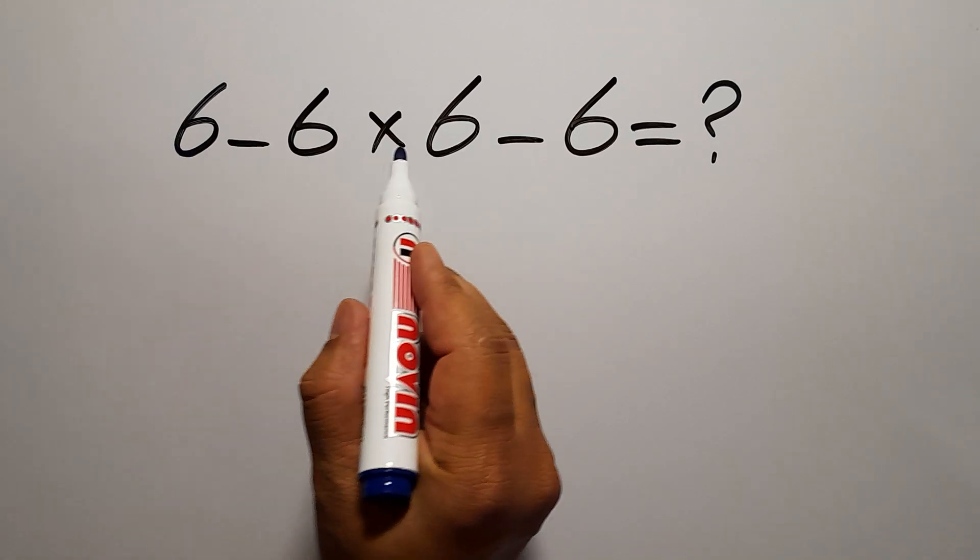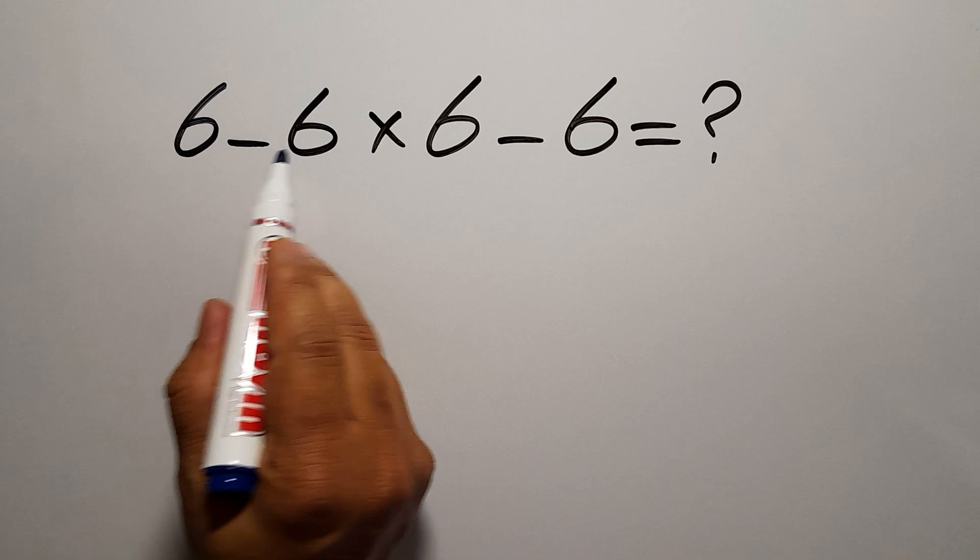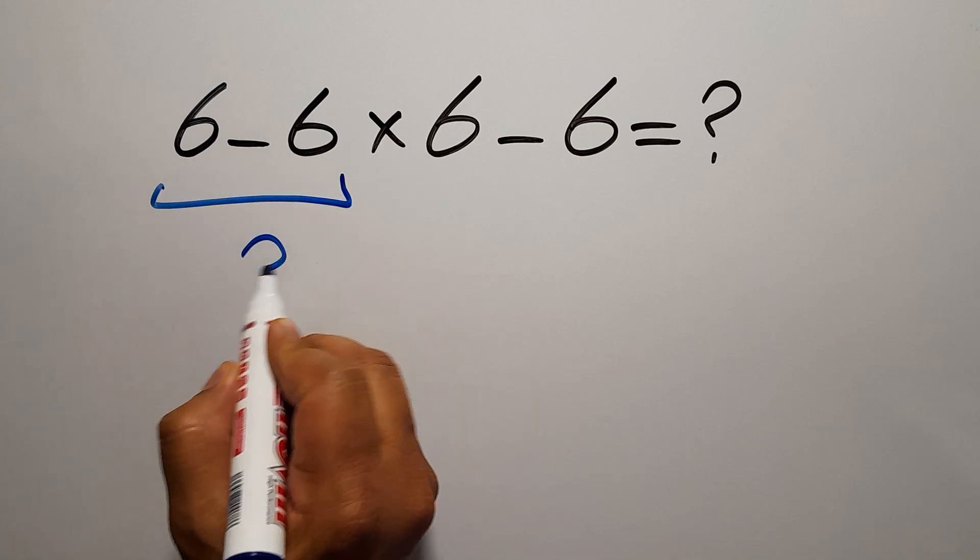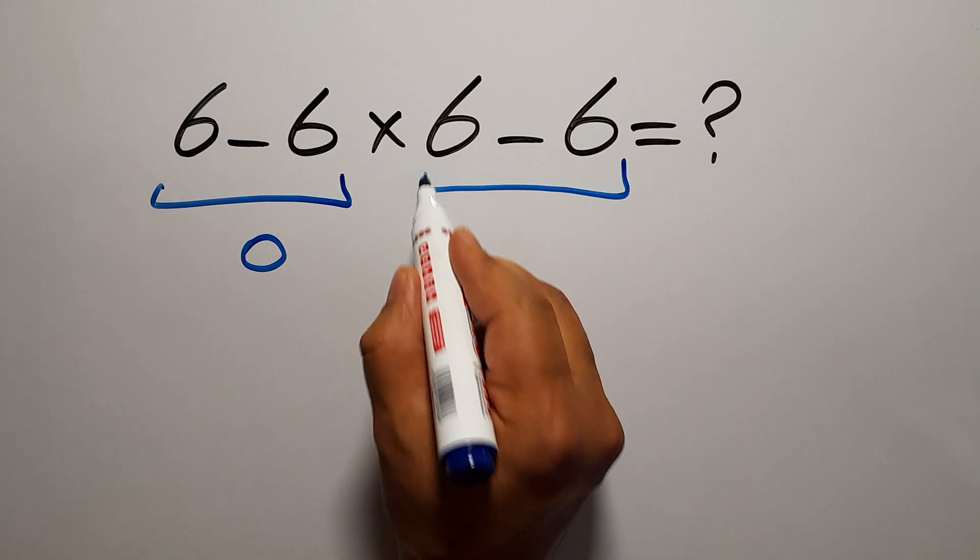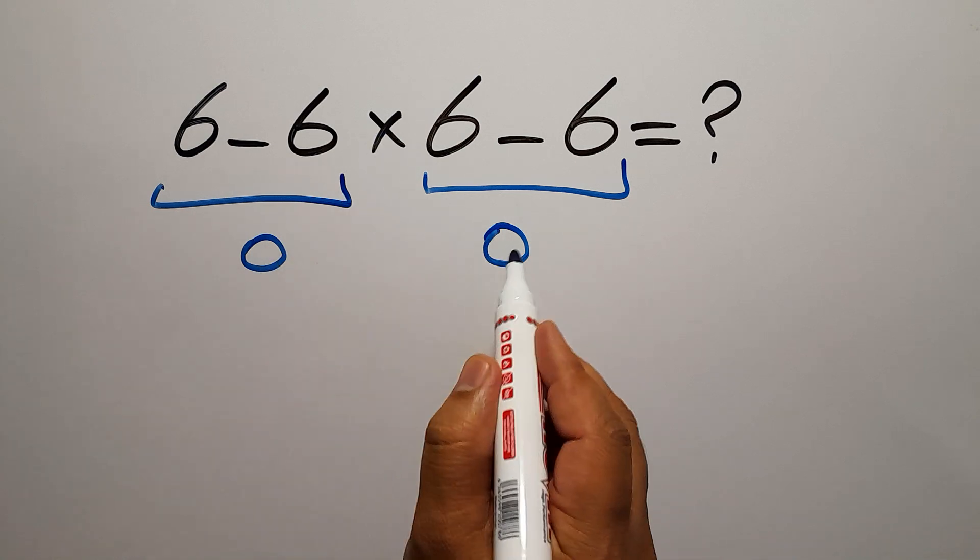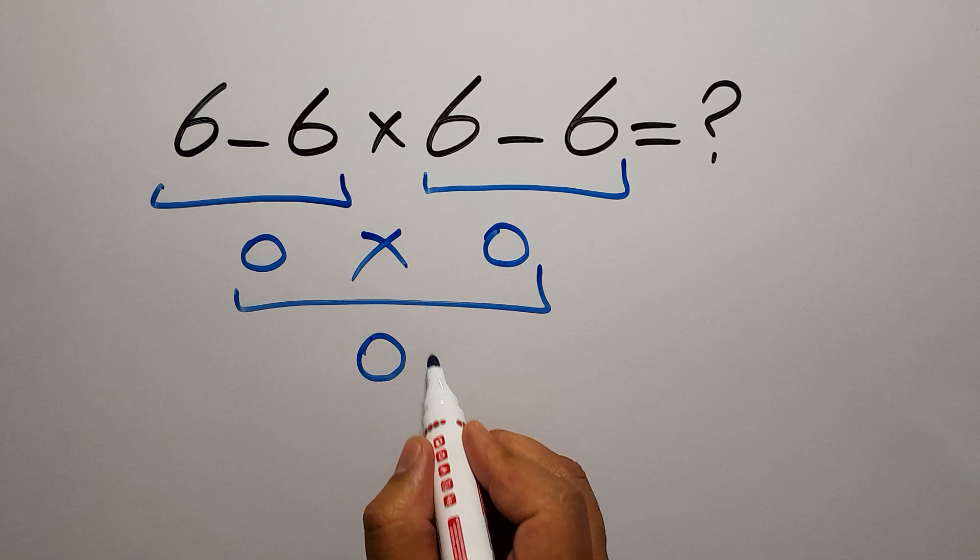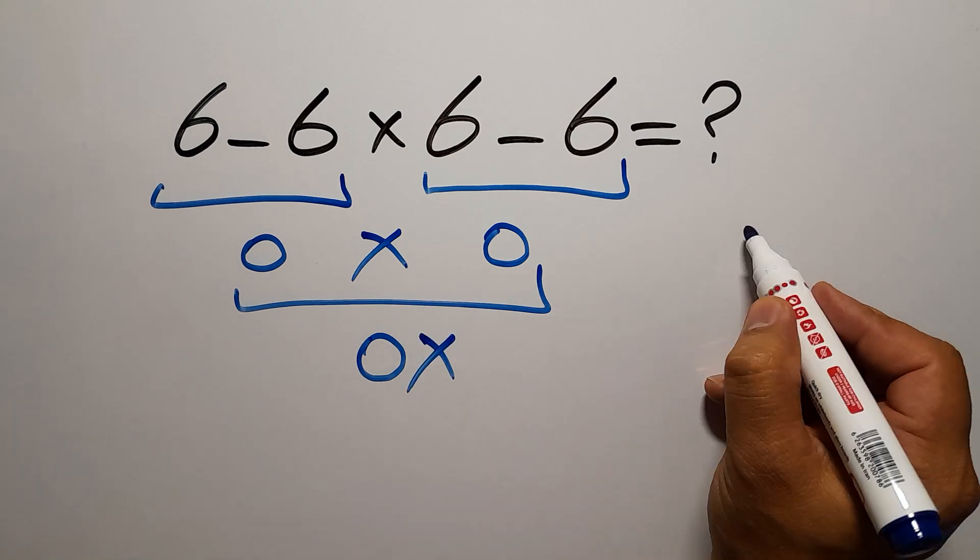6 minus 6 times 6 minus 6. 6 minus 6 is just 0, and again we have here 6 minus 6, 0. And 0 times 0 is just 0. But this answer is not correct because according to the order of operations, which is PEMDAS...